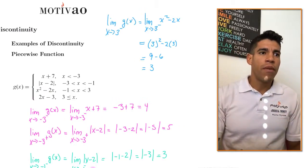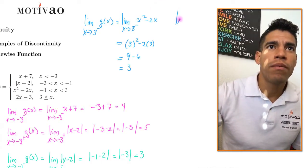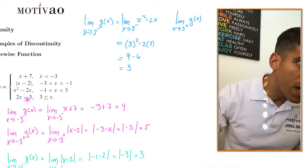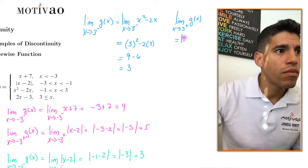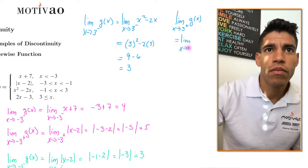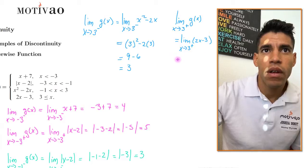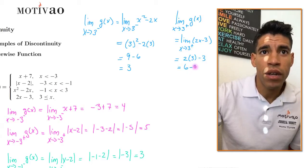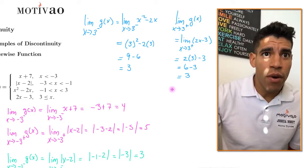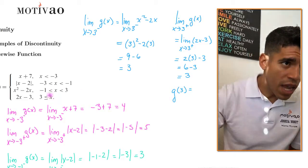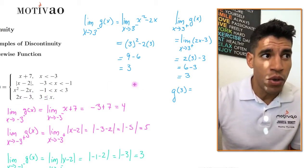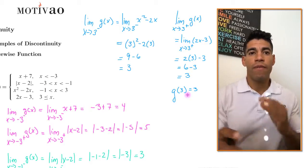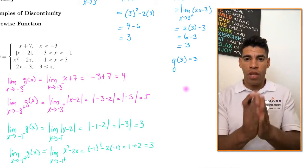Now let's do the limit from the right of 3. From the right of g of x, we're choosing x greater than or equal to 3, which gives 2x minus 3. Substituting 3: 2 times 3 minus 3 equals 6 minus 3, which is 3. And g of 3 — because x is greater than or equal to 3, we choose 2x minus 3, which is also 3. Therefore, at 3, the function is continuous.